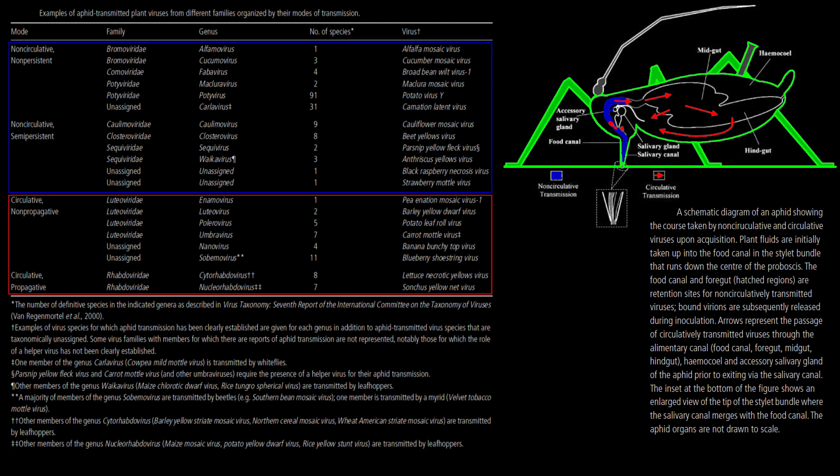More than their close relatives, aphids are the most common vectors of plant viruses and account for 50% of transmission therein. Primarily, this is due to the nature of how their mouthparts function in transmitting virions into plant cells without causing them to become non-viable,